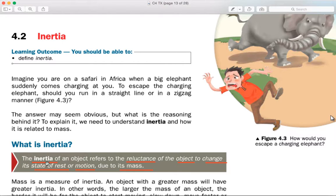So what is inertia? Do highlight this: inertia is the reluctance of the object to change its state of rest or motion due to its mass. Key word here: reluctance. What does reluctance mean?